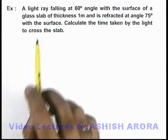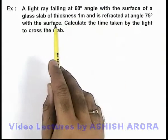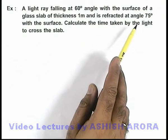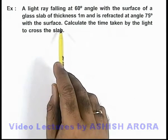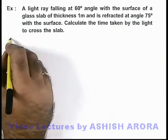In this example, we are given that a light ray falling at 60 degree angle with the surface of a glass slab of thickness 1 meter and is refracted at an angle 75 degree with the surface. Here we are required to calculate the time taken by the light to cross the slab.